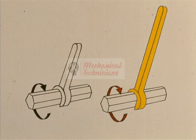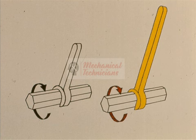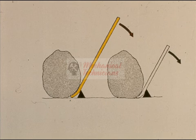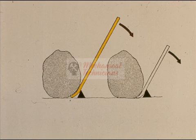Now let's examine another reason for using gearboxes besides changing speeds. This graphic illustration demonstrates the principle of torque, another reason behind the use of gearboxes. Let's assume that both of the nuts shown are equally tight, and that it is your job to loosen them. As you know, it would be much easier to loosen the nut with the yellow long-handled wrench. This is true because of the basic principle of leverage.